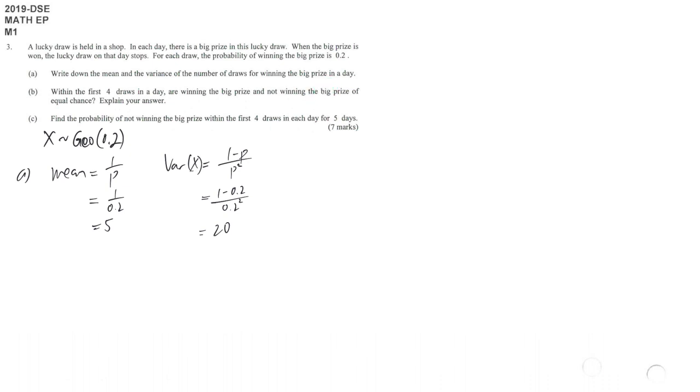In part b, they say within the first 4 draws in a day, we are going to compare the chance of winning the big prize or not winning the big prize.